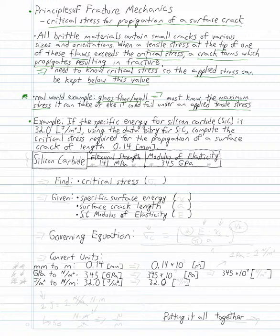Example: If the specific energy for silicon carbide (SiC) is 32 joules per meter squared, using the data entry for the silicon carbide, compute the critical stress required for the propagation of a surface crack of length 0.14 millimeters.